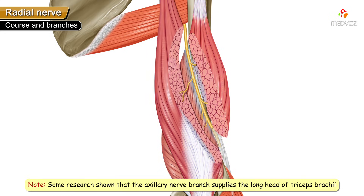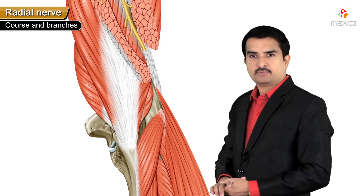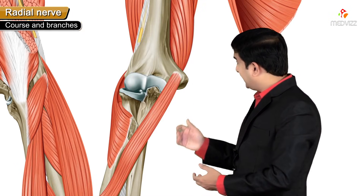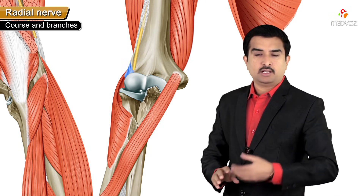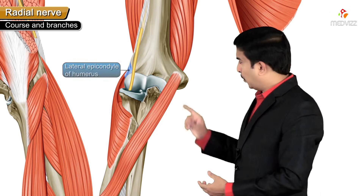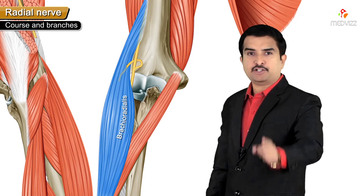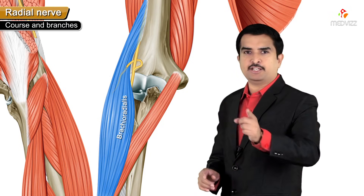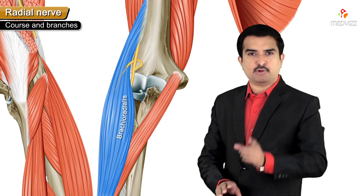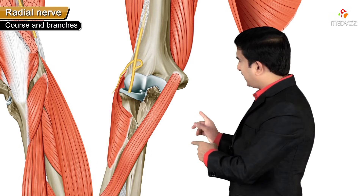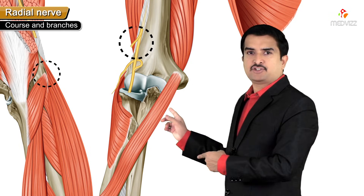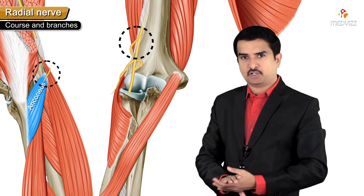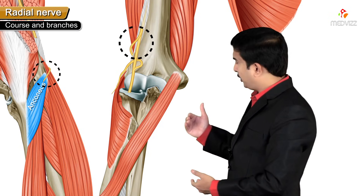In the arm, the radial nerve supplies the lateral, medial, and long heads of the triceps. As it leaves the spiral groove and emerges at the anterior aspect of the lateral epicondyle of the humerus, it gives off a branch to the brachioradialis muscle. At this location, the radial nerve also gives off a branch to the anconeus muscle - a small vestigial muscle on the posterior aspect of the elbow that abducts the ulna during pronation of the forearm.